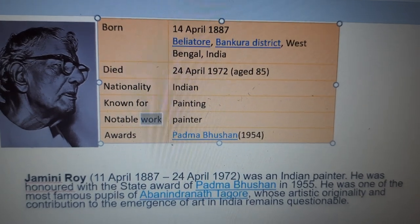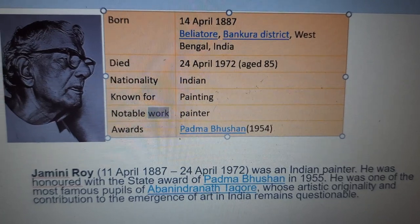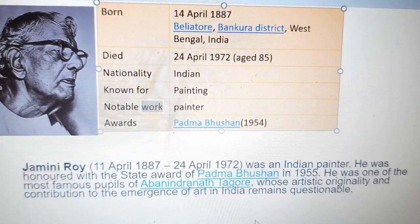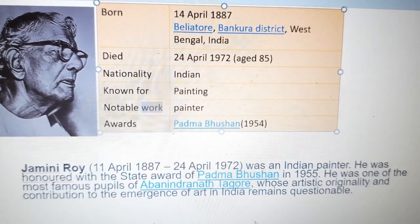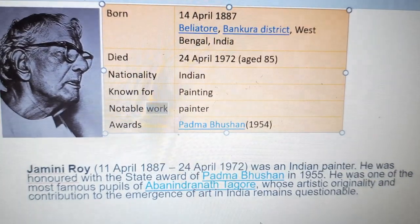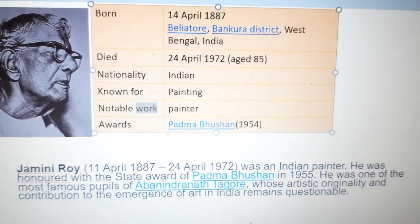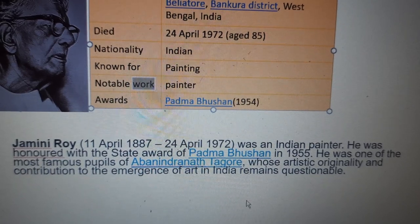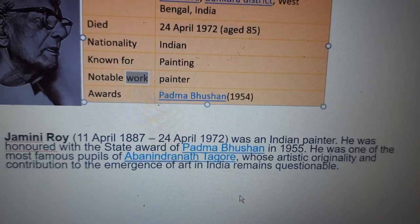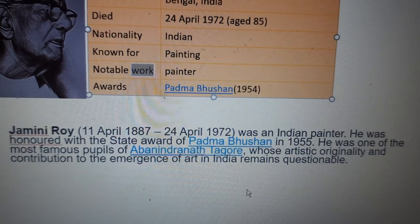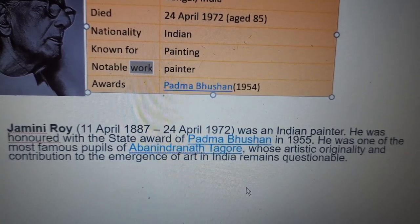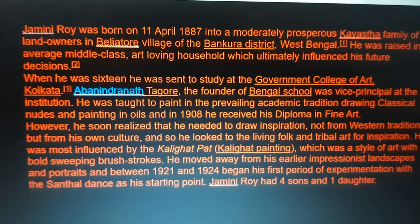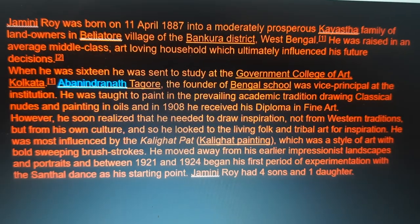Jamini Roy was born on 11th April 1887. He was an Indian painter, honoured with the state award of Padma Bhushan in 1955. He was one of the most famous pupils — pupil means student — of Abanindranath Tagore, whose artistic originality and contribution to the emergence of art in India remains notable. Jamini Roy was born into a moderately prosperous Kayastha family.